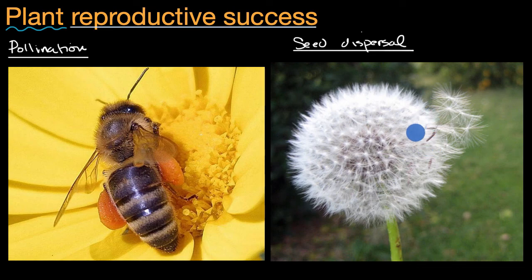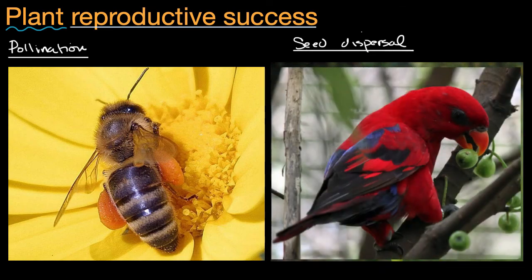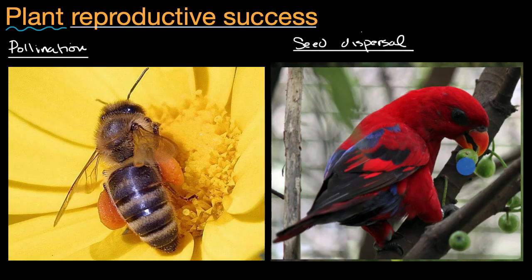But seed dispersal also gets the help of animals. This right over here is a picture of a bird eating fruit from a plant, and as that bird flies away and munches on that fruit, that seed might be dispersed. It might be thrown down hundreds of yards or even miles away from the original plant.